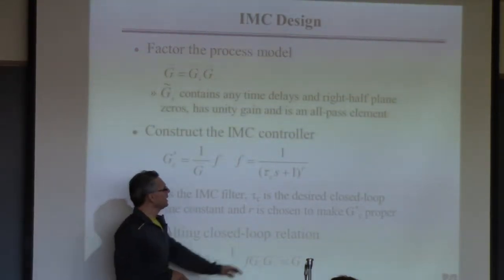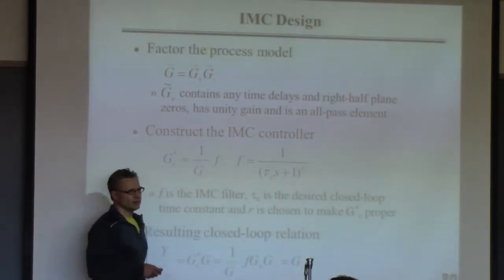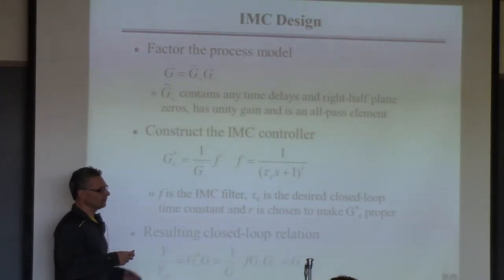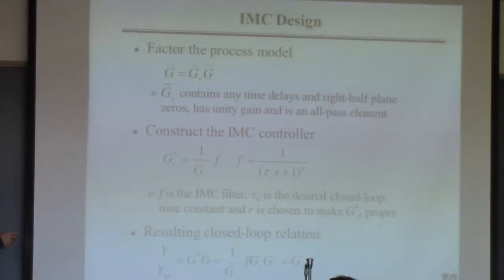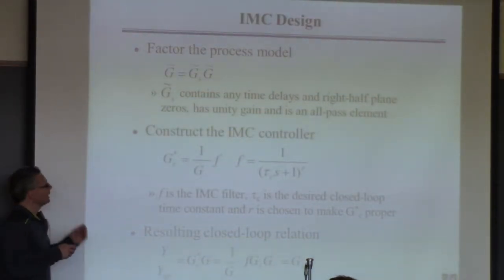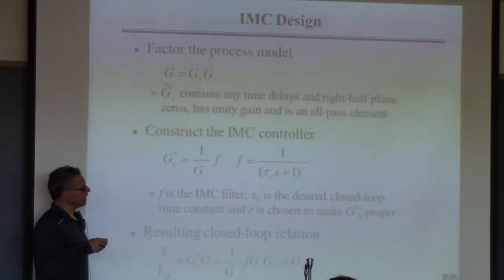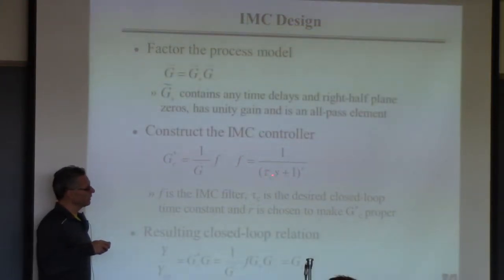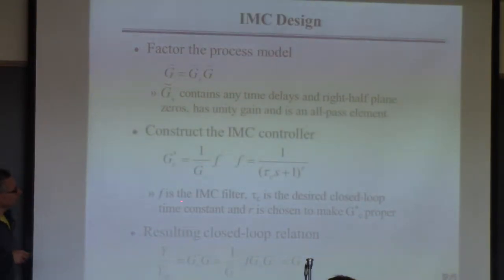You pick F to look like this. Typically R is 1, first order, gain of 1, time constant tau_C. Sometimes you have to have R greater than 1 because you want the controller to have derivative action but not double derivative action — I talked about this last time. F is the IMC filter.